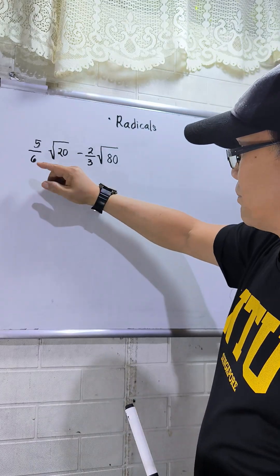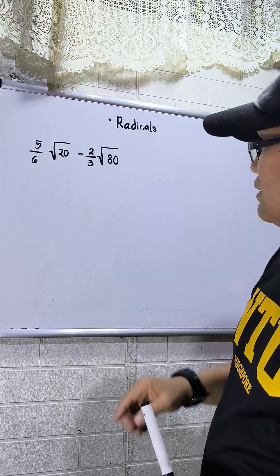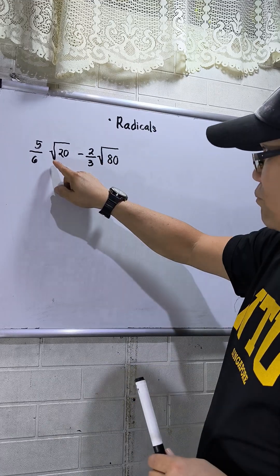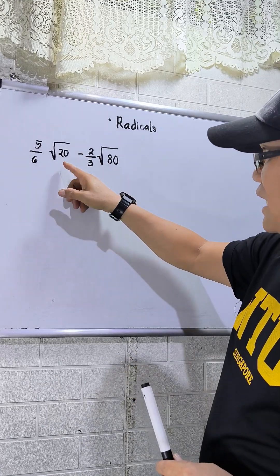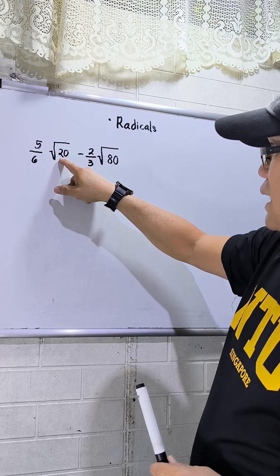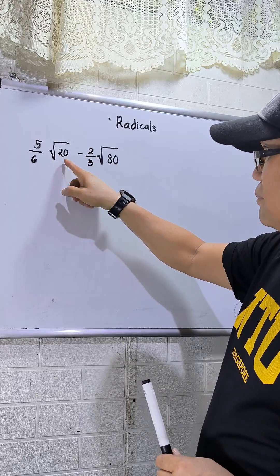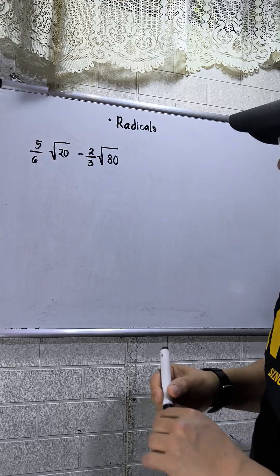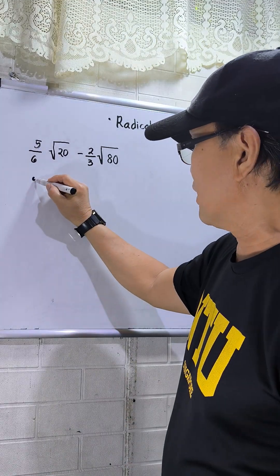So I have 5 over 6 times square root of 20 minus 2 over 3 times square root of 80. Take note we have square root, so we have to think the radical must be a perfect square. One of them is a perfect square, same with the second square root.